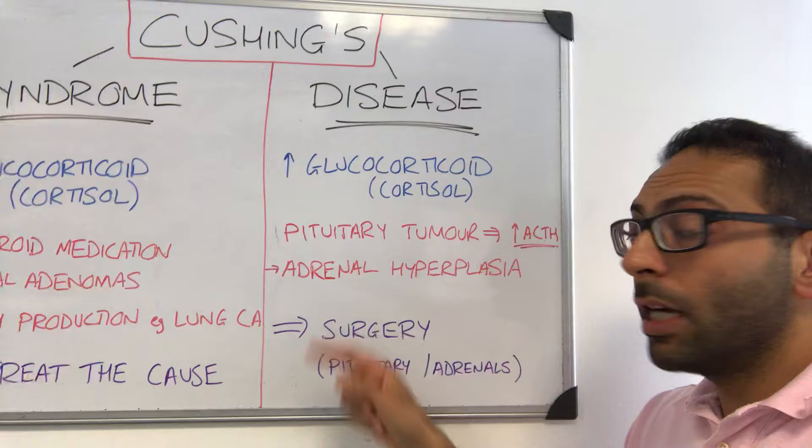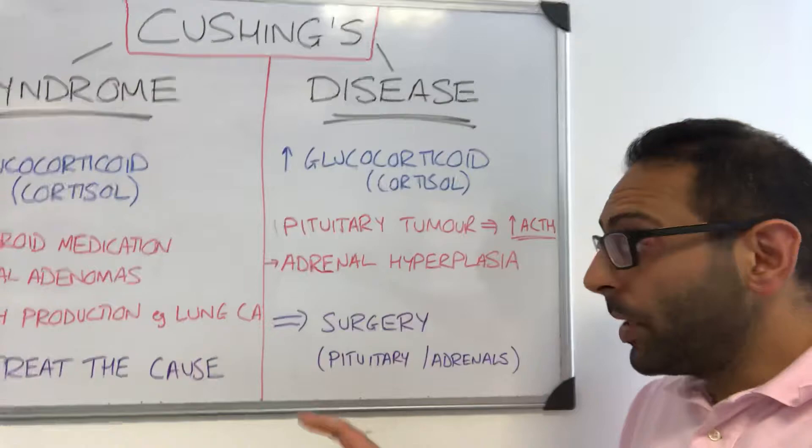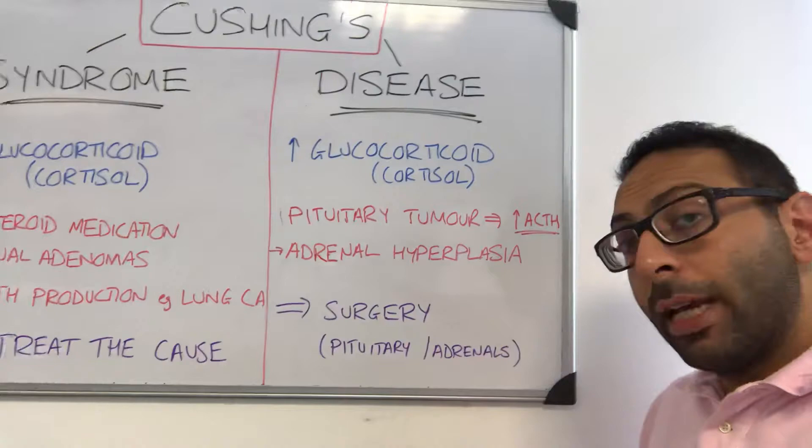To treat Cushing's disease, you either attack the pituitary gland — operate and get rid of the cause there — or you may need to go and operate on the adrenals themselves.